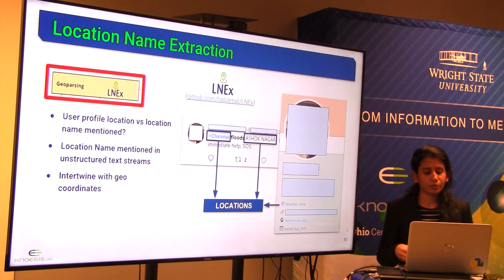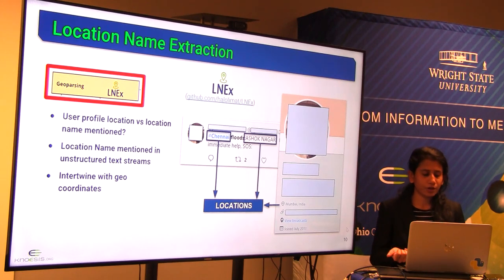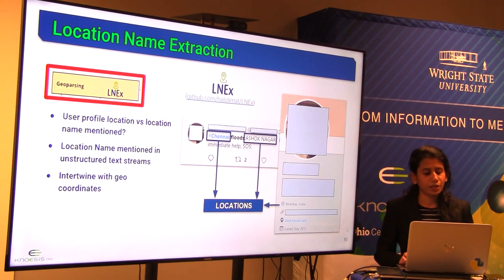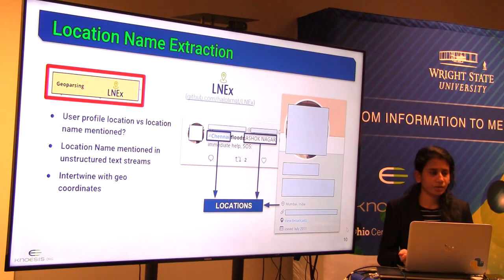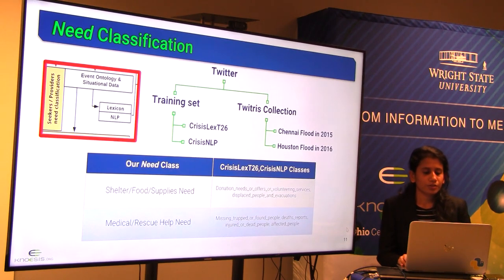Therefore, we resort to our tool Linux, which extracts location names from text data and attaches each location to its latitude and longitude information on the map. The text data is then classified into one of the need classes. We care more about the locations talked about rather than the location from which the tweet came. For example, in the previous example, the location talked about is Chennai and Ashoknagar, but the metadata location goes to Mumbai — about 800 miles away from the disaster.